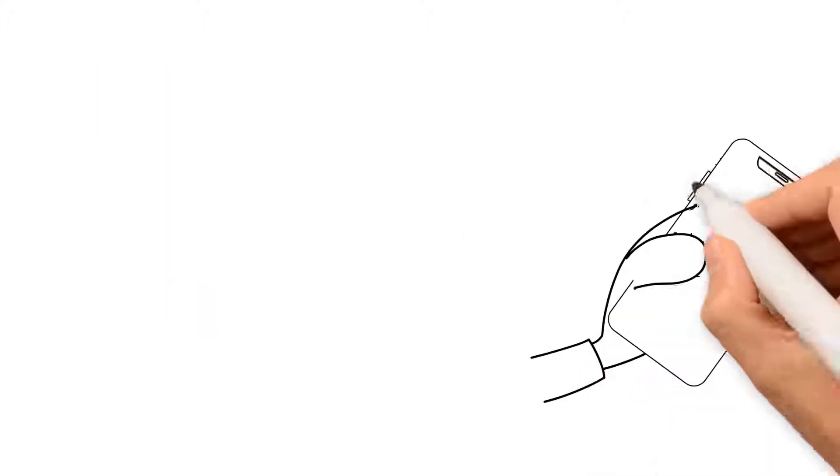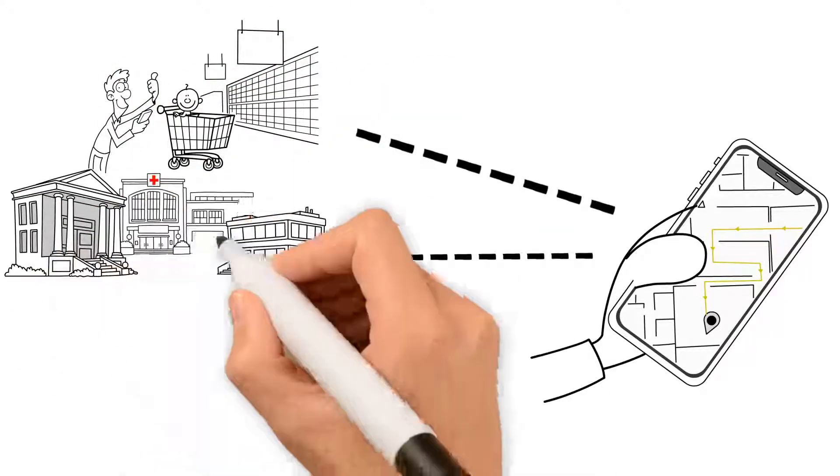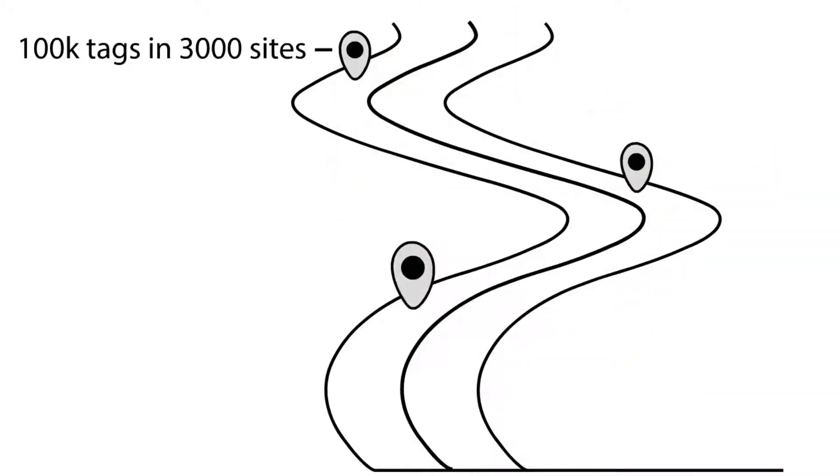IntraPosition has been operating in a variety of verticals: retail, healthcare, and industry. We've been following a roadmap to deploy some 100,000 tags in 3,000 sites over the next four years.